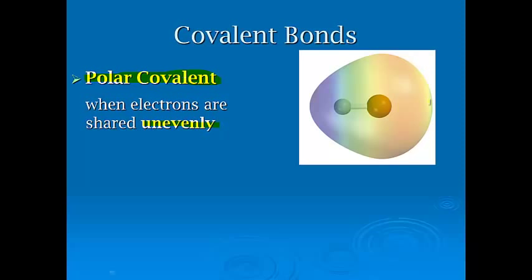If the electronegativity difference is too large, this side over here is going to essentially win the tug of war. This side of the atom is going to be negatively charged. This side of the atom is going to be positively charged, because this side is going to pull the electron that way.